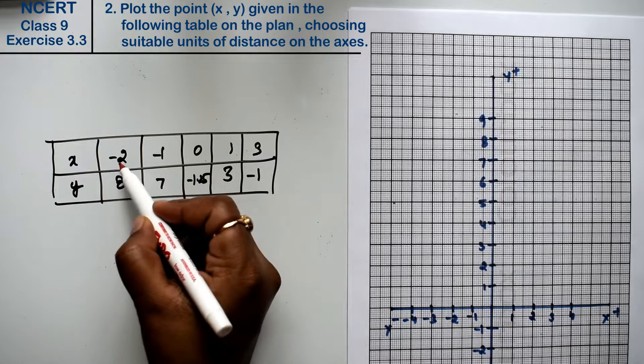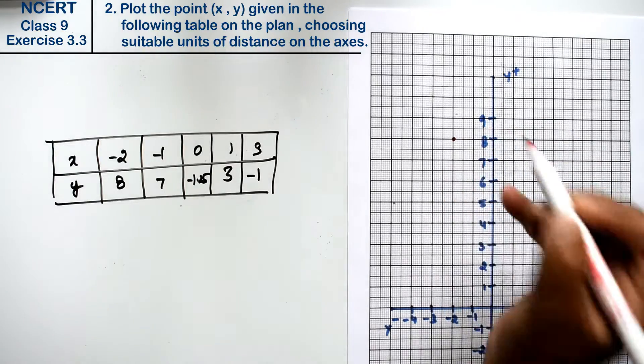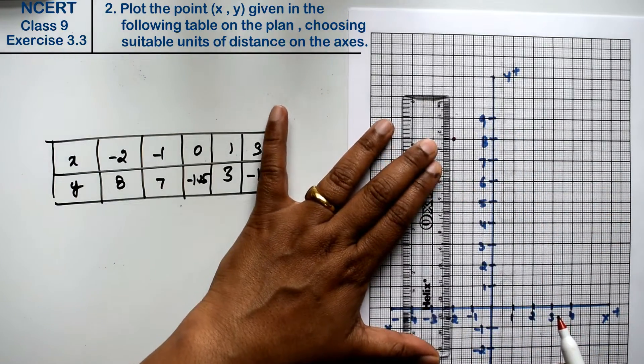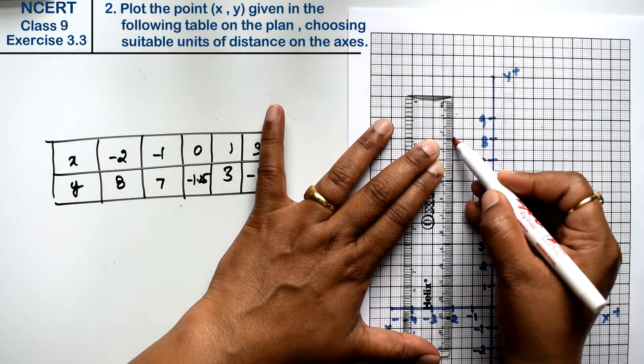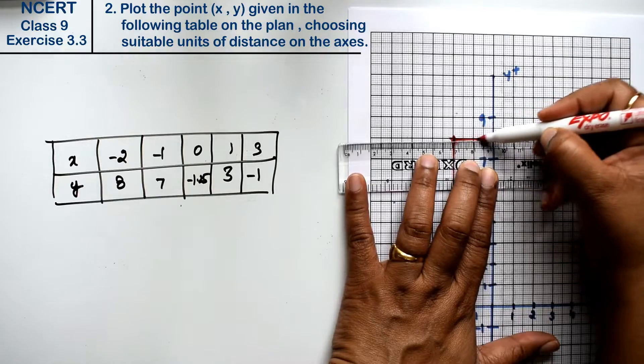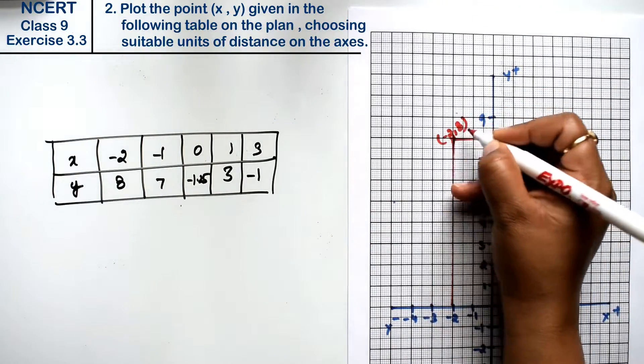x is minus 2, x is minus 2, and y is 8. y is 8, here, right friends. See, I will mark this point. Minus 2 and 8.